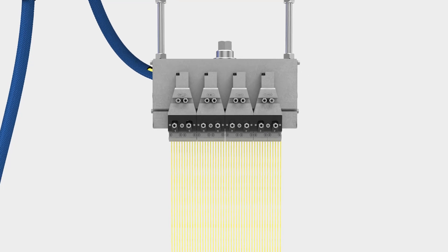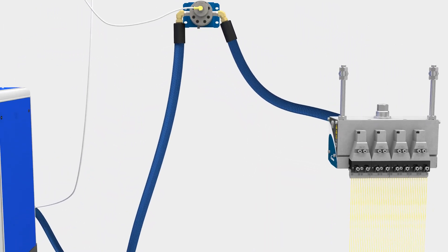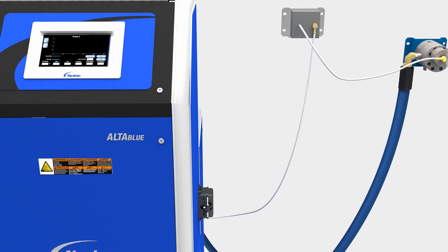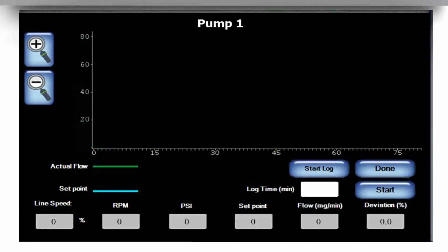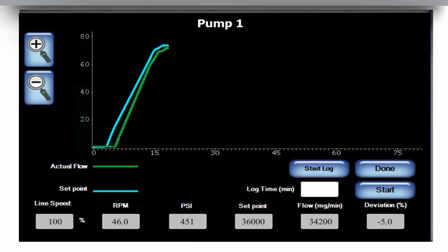With closed loop flow control enabled, the Alta Blue Touch graph clearly indicates the improvement in material delivery accuracy, even during the challenging ramp up and ramp down production phases.